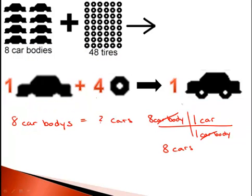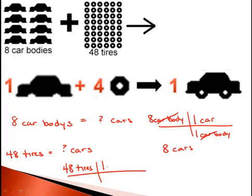But now, if we have 48 tires, how many cars would we be able to equip if we had 48 tires? We know that we start with our 48 tires, and then 1 car requires 4 tires. So 48 times 1 divided by 4, we would have enough to equip 12 cars.